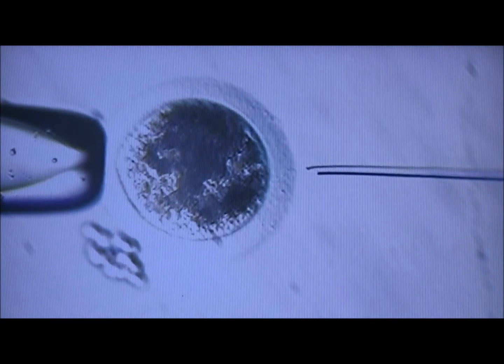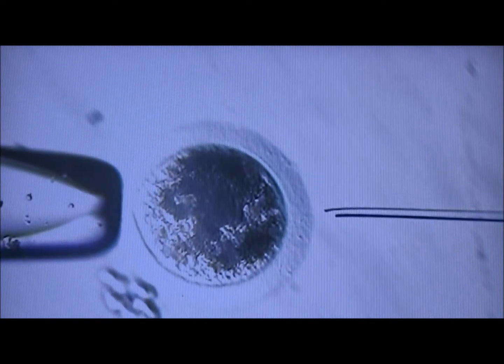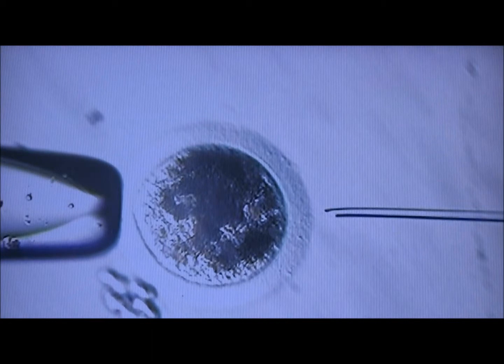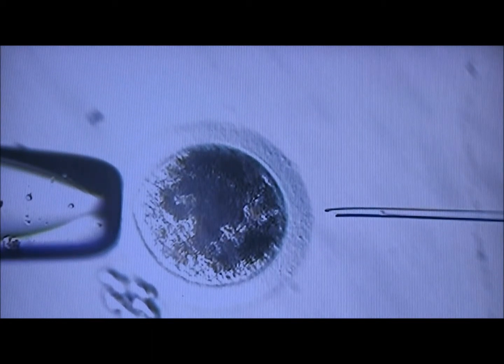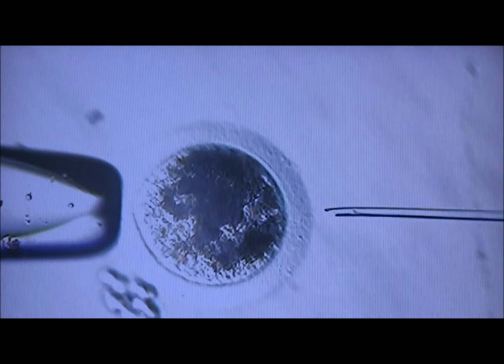Then the sperm is slowly advanced up the injection pipette until it is in position, and fertilization is accomplished by inserting the injection pipette with the sperm through the zona, which is the shell of the egg, and into the inside of the egg.